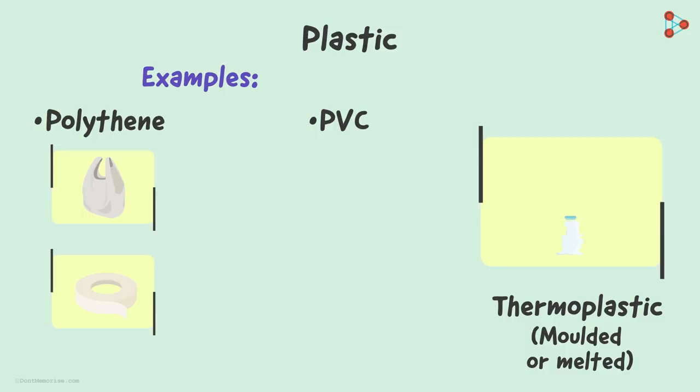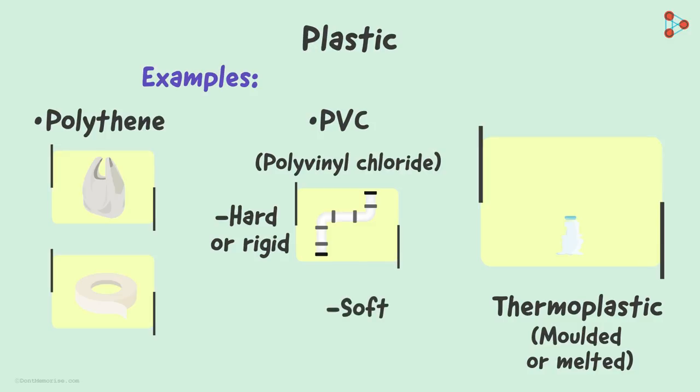It stands for polyvinyl chloride. PVC comes in two distinct forms. The first one is hard or rigid PVC that is used in making strong structures like construction pipes. In contrast, the other type is soft PVC which is used for making containers and bottles used daily by us.